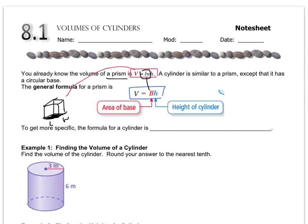Now in this lesson, when we start talking about cylinders, the area of the base — the shape of the base — is a circle. So we're not going to use length times width because that's not how you find the area of a circle. We're going to use A equals pi r squared.